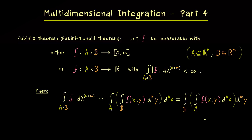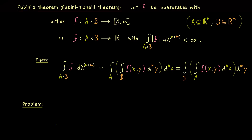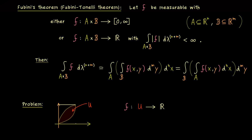This is Fubini's theorem as we know it: we can apply it if the function F is defined on a Cartesian product. Therefore the first problem is: what do we do if we don't have that? For example, imagine we have a function defined on R2 where the domain is not a rectangle but maybe a curved region. So F is defined on U, and Fubini's theorem is not directly applicable to this function F.